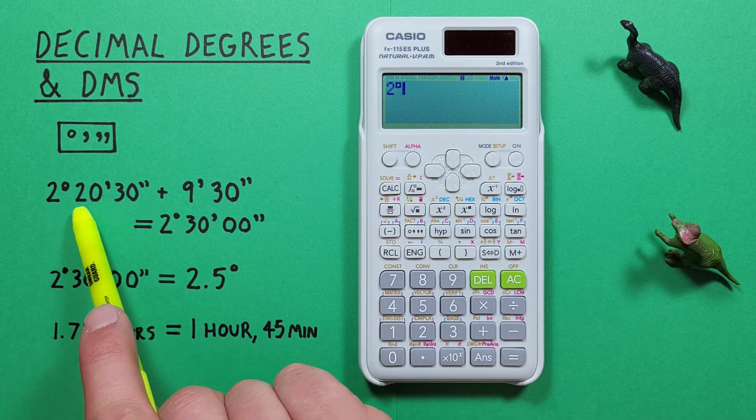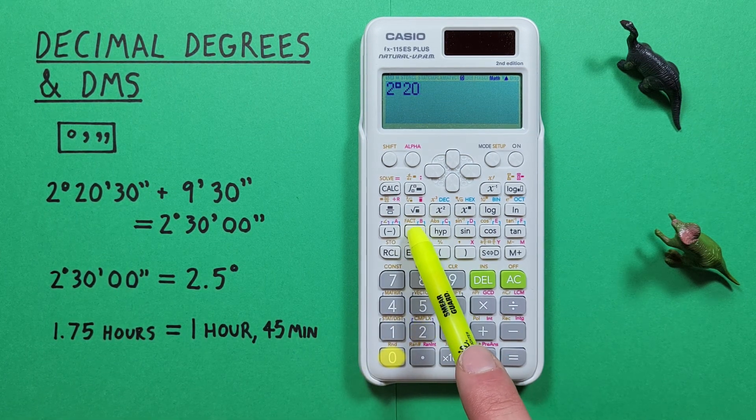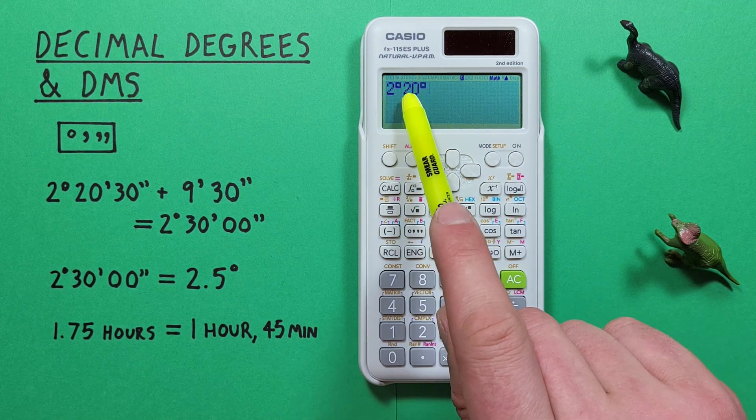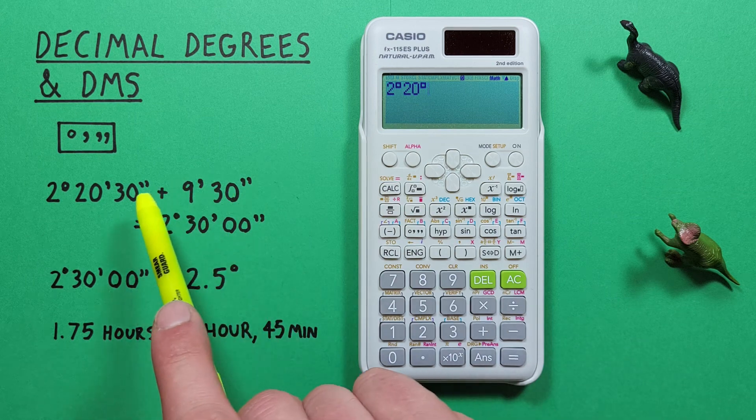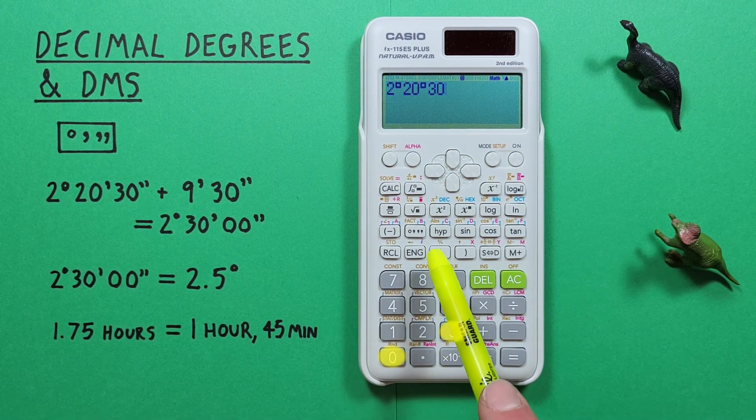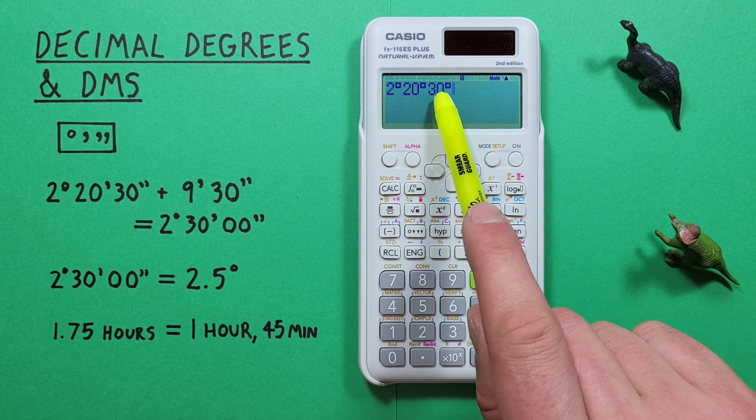Next we enter our minutes which was 20 and then press the degrees key again and we see we get that same symbol but since it's second in line that now represents minutes. And then our 30 seconds and press the degree key again, there we go, this time it represents seconds.